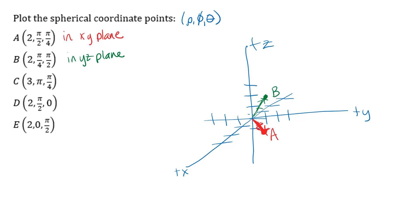For point C, phi equals pi — that rotates from the positive Z axis all the way down to the negative Z axis. So this point is on the negative Z axis. Then rotating around theta equals pi over 4 keeps us on the negative Z axis regardless, and rho equals 3 means three units below the XY plane. When phi is pi, any theta value puts you at the same location on the negative Z axis.